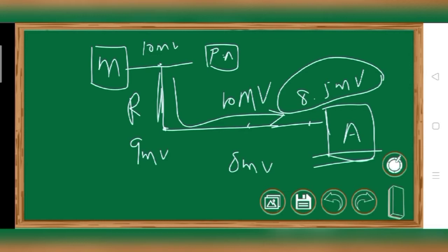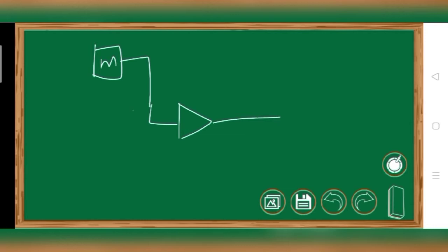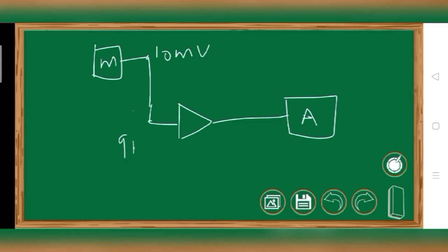You are losing 2.5mV of signal. Ideally it should pass the full 10mV, but practically it is not possible due to resistance of the wire, temperature, and other factors. To overcome this issue, what we do is connect the mic to a buffer amplifier circuit and then to the amplifier. You are getting 10mV of signal at the mic, but you may lose 1mV due to resistance of the wire and temperature.